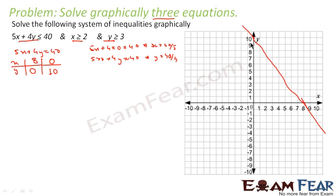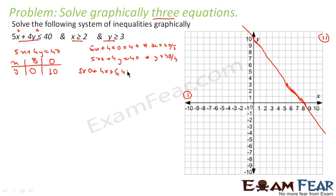This is the graph — it should be a straight line, please understand it as a straight line. Now for this graph we also divide the plane into region 1 and region 2. We put the test point (0, 0) in region 1: 5 into 0 plus 4 into 0 is less than 40, which gives 0 is less than 40. That is true, so region 1 satisfies this condition.